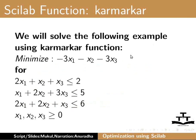Minimize minus 3x1 minus x2 minus 3x3, subject to: 2x1 plus x2 plus x3 less than or equal to 2; x1 plus 2x2 plus 3x3 less than or equal to 5; 2x1 plus 2x2 plus x3 less than or equal to 6; where x1, x2, and x3 are all greater than or equal to 0. Note that all the functions — the objective function as well as the constraints — are linear.